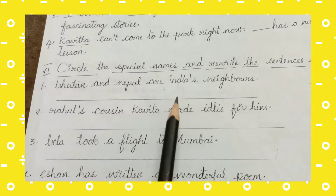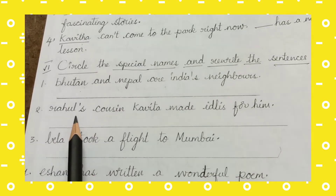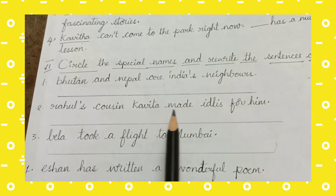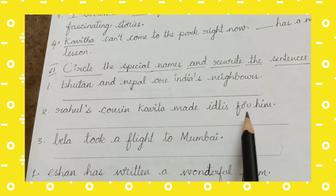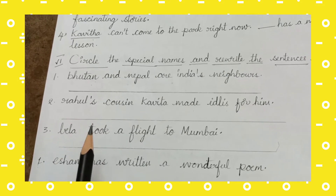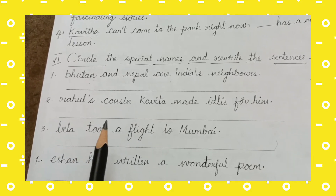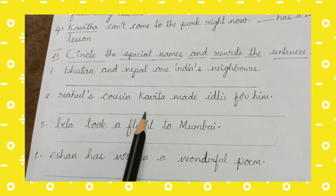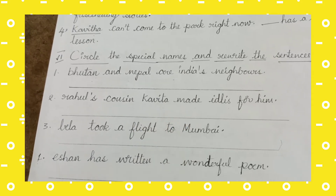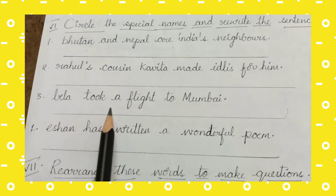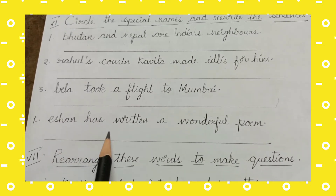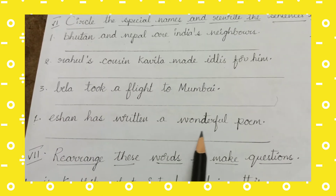I hope you understood how to write. The sentences are: First, 'Bhutan and Nepal are India's neighbors.' Second, 'Rahul's cousin Kavita made a list for him.' Third, 'Bela took a flight to Mumbai.' Fourth, 'Ishan has written a wonderful poem.' Circle the special names and rewrite each sentence correctly.